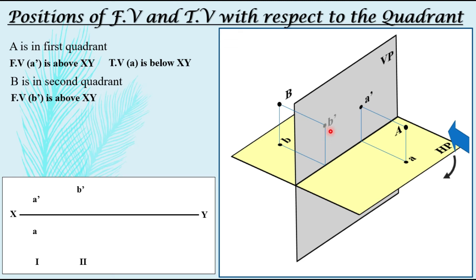Now, as we rotate this horizontal plane clockwise 90 degrees, the same rotation applies here — you cannot change the direction or angle. If you rotate it 90 degrees, it will overlap with the vertical plane, and the top view of B will come above the XY line. So the top view of B is also above the XY line. For the second quadrant, both front view and top view are to be drawn above the XY line.